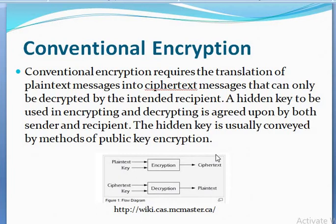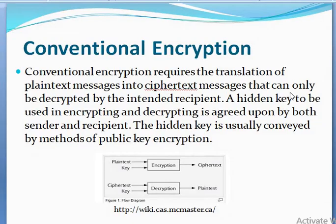Good morning students. Today's topic is conventional encryption. Conventional encryption is basically an encryption technique for converting plain text into cipher text. Conventional methods are those older methods which were used previously, and currently there are two types of encryption and decryption techniques. Before we go further, we will see what conventional encryption techniques we have. The definition here shows: plain text message is converted into cipher message so that it can be accessed only by the person for whom the information is meant.